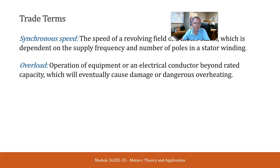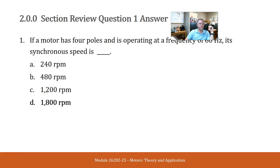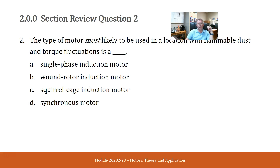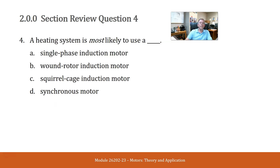Here are some trade terms you should read over and become familiar with for this section, and some review questions. If a motor has four poles and is operating at a frequency of 60 hertz, the synchronous speed — remember this calculation is in your book and we will do them in class — is 1800 RPM. The type of motor most likely to be used in a location where there is flammable dust and torque fluctuations is a squirrel cage induction motor. A type of motor used in precision applications that requires constant speed with zero slip is a synchronous motor. A heating system is most likely to use a single phase induction motor.